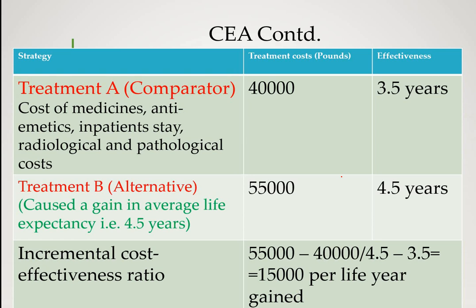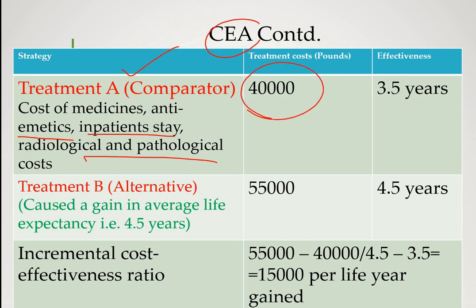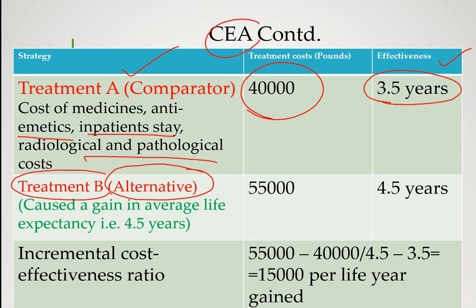Here is the classical example of cost effectiveness analysis. A mode of therapy already in practice in an oncology unit — requiring use of antiemetics and certain radiological and pathological examinations — has a total cost of 40,000 pounds, and the effectiveness is a patient life expectancy of 3.5 years. The alternative therapy, treatment B, has a total cost of 55,000 pounds, which is much greater than the comparator.